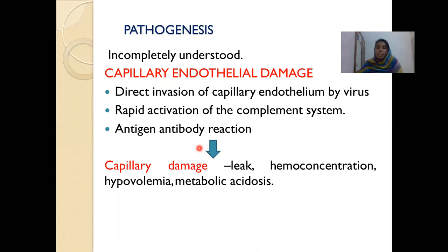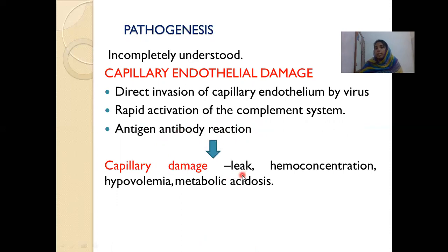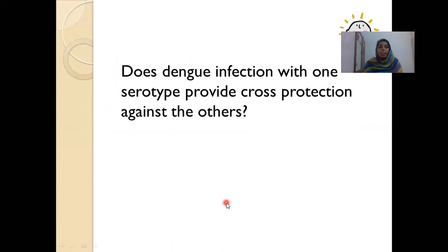Coming to the pathogenesis — the pathogenesis of dengue is not fully understood, but the main thing is capillary endothelial damage. There is direct invasion of the capillary endothelium by the virus, rapid activation of the complement system, production of a lot of cytokines, and an antigen-antibody reaction which causes endothelial damage. Once capillary endothelial damage has happened, there is a leak leading to hemoconcentration, hypovolemia, shock, and metabolic acidosis.